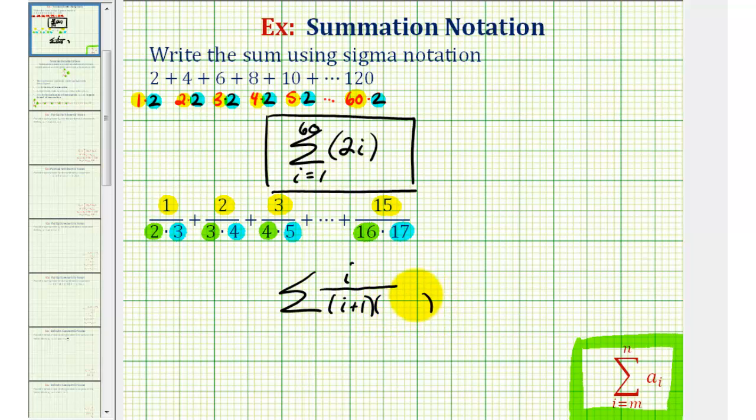And then since the second factor is always two larger than the numerator or the index, then the second factor would be i plus two. Let's go ahead and center this i here.